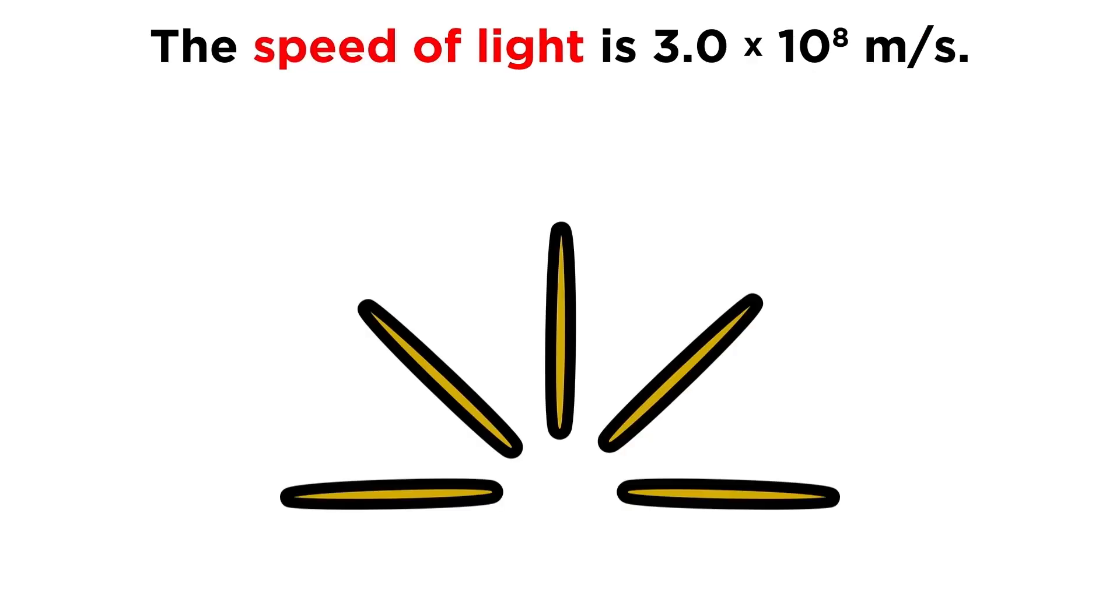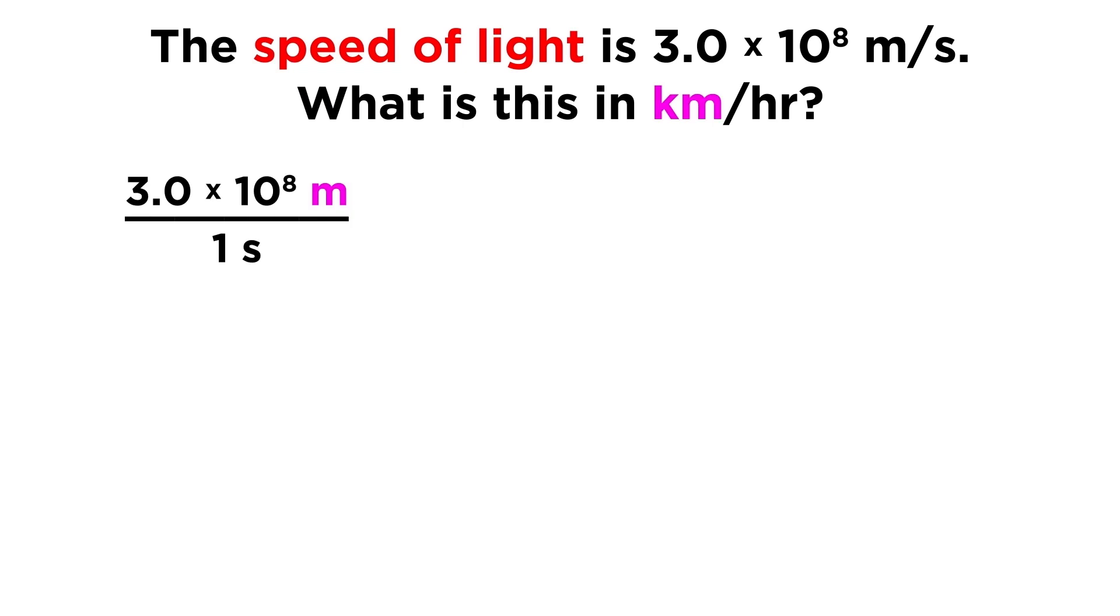Let's try an example of this type of conversion. The speed of light is 3.0 times 10 to the 8 meters per second. What is this in kilometers per hour? We will have to replace meters with kilometers, and seconds with hours. Let's do the distance first. We have meters on top, so we need to multiply by 1 kilometer over 1000 meters.